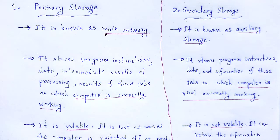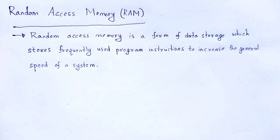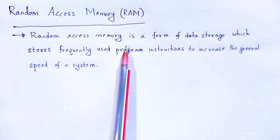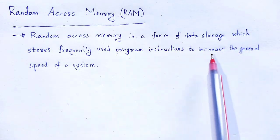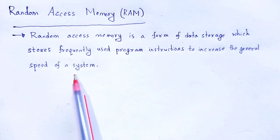Next, the idea of RAM and ROM. RAM — random access memory — is a place in a computer where temporary data currently in use are kept, so it can be quickly reached by the processor. Random access memory is a form of data storage which stores frequently used program instructions to increase the general speed of a system.